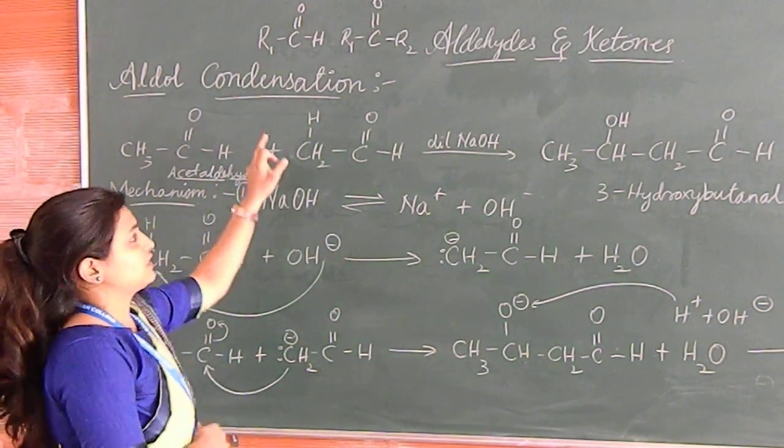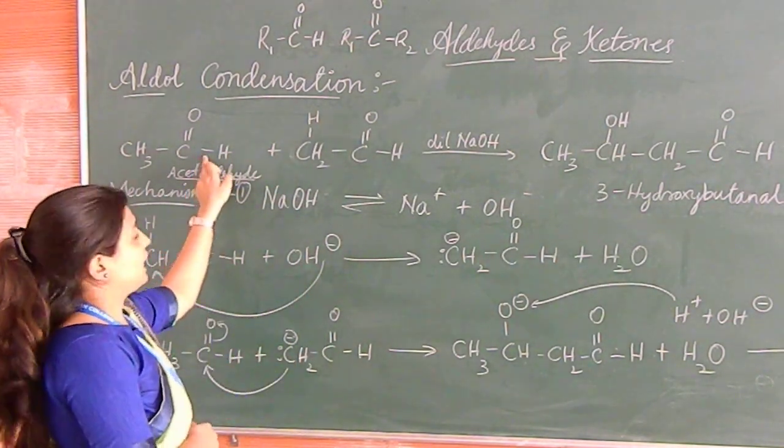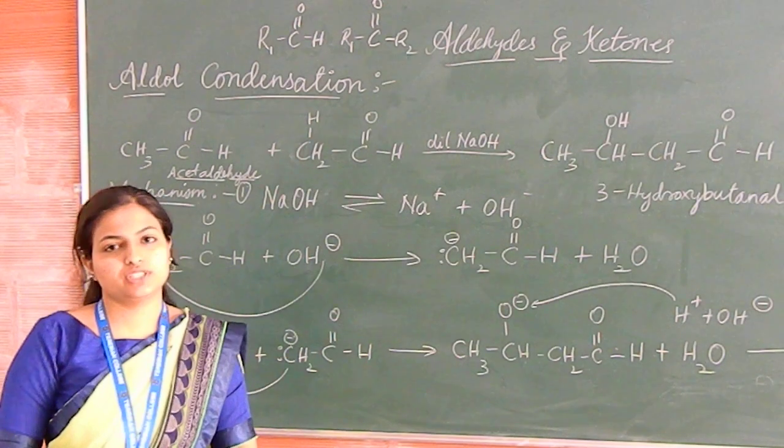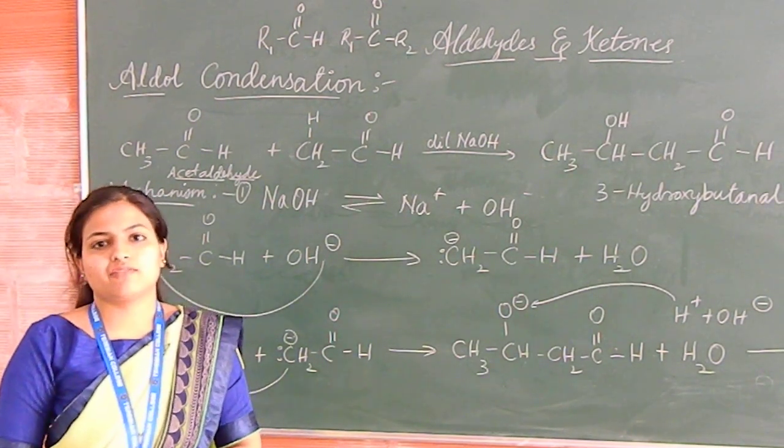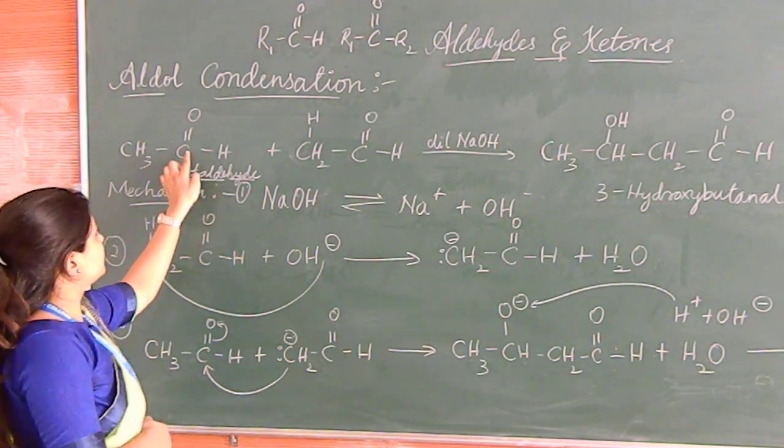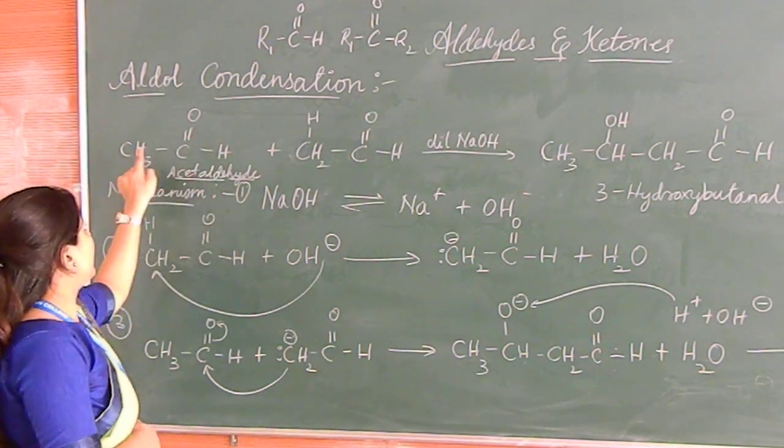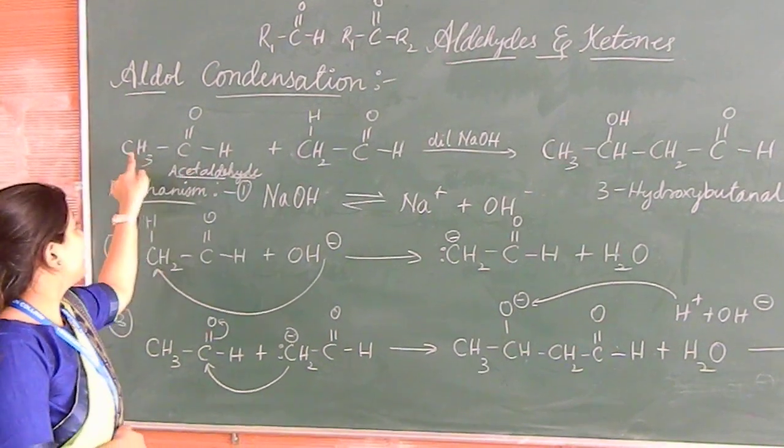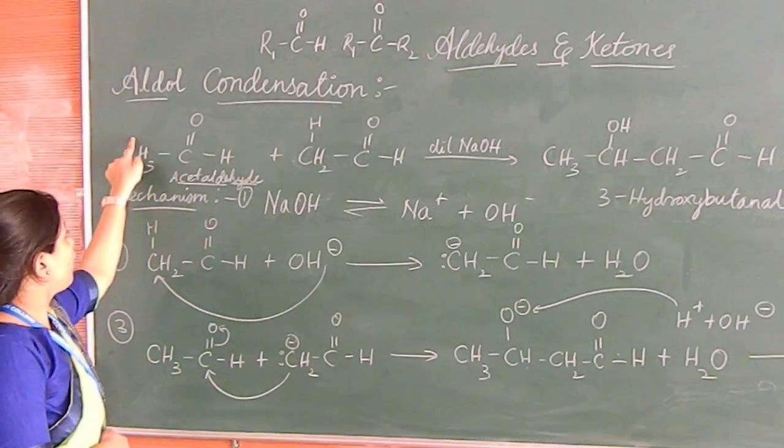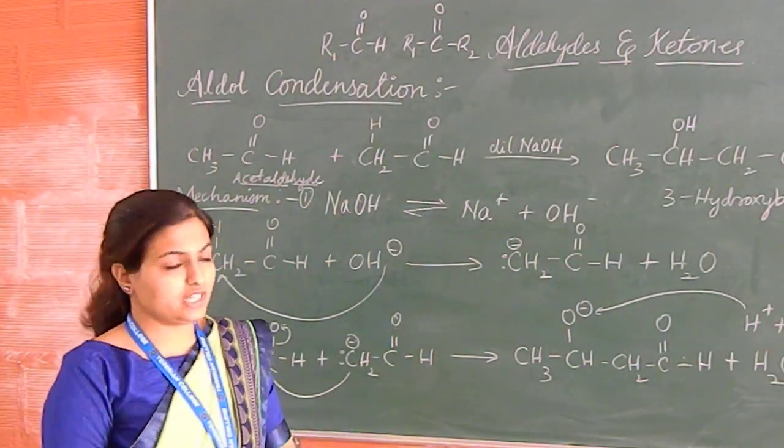Now aldol condensation. What kinds of aldehydes and ketones come here? Usually the aldehydes which have an alpha hydrogen atom react under aldol condensation. What do you mean by alpha hydrogen atom? We consider this C double bond O. C double bond O is a functional group here, and this carbon is attached directly to this C double bond O. Hence, it is alpha carbon, and all the hydrogens attached to this carbon atom are called alpha hydrogen atoms.